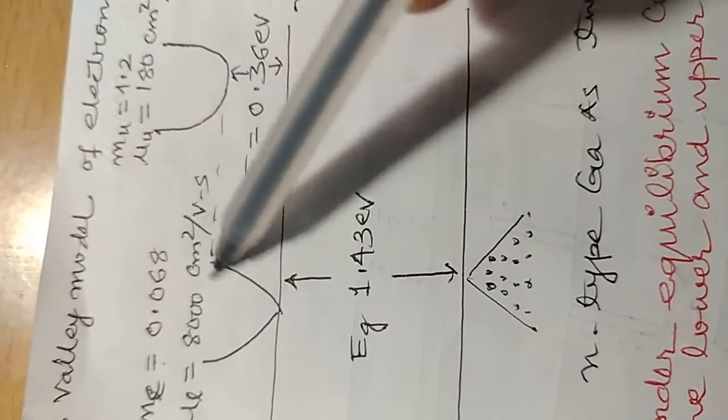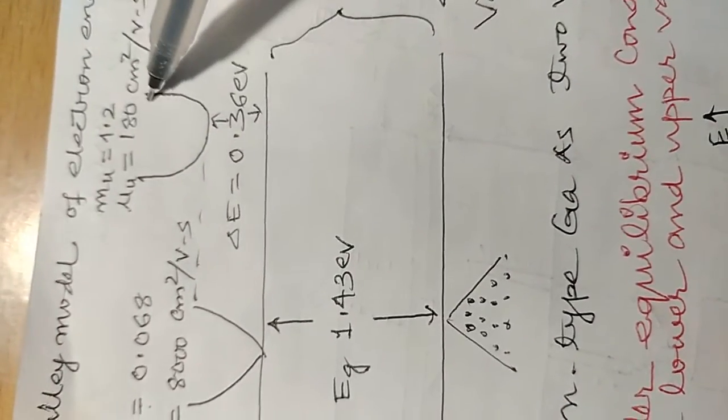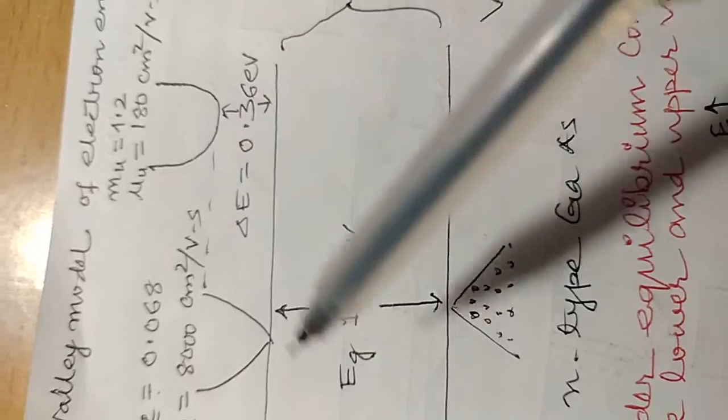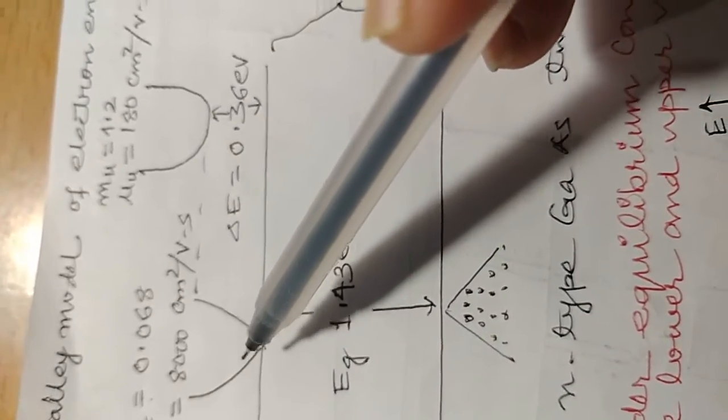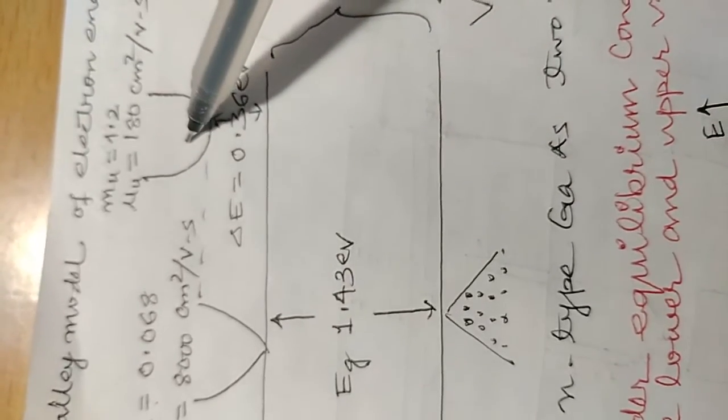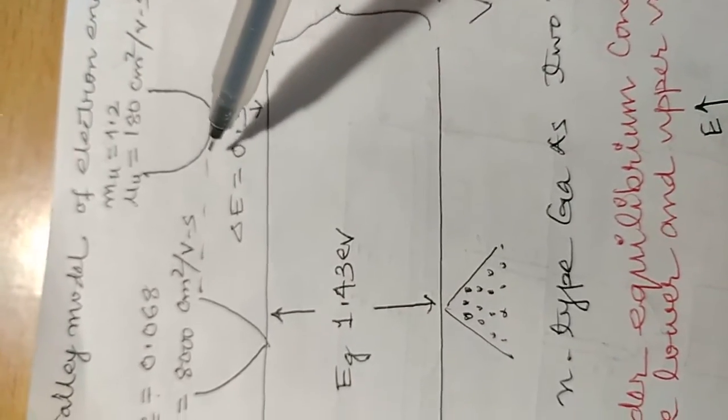It is having higher mobility versus lower mobility. For the conduction purpose of the device, the electrons have to be transferred from lower valley to the upper valley with the application of some voltage.